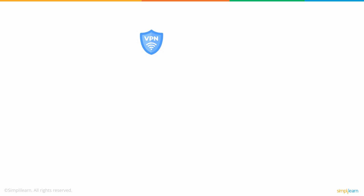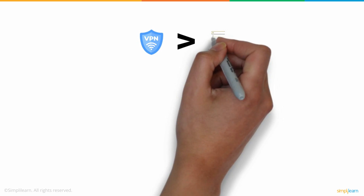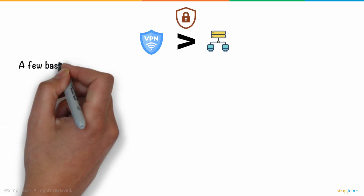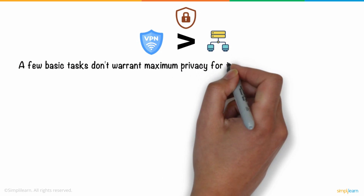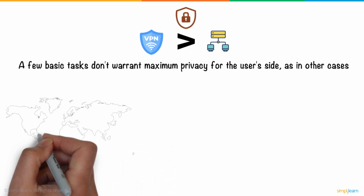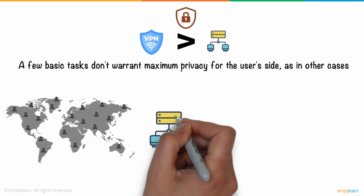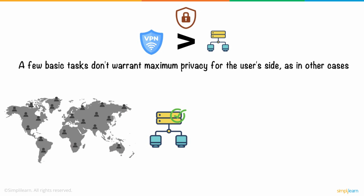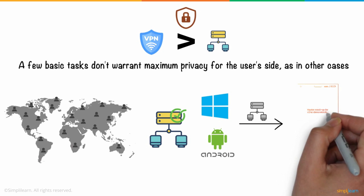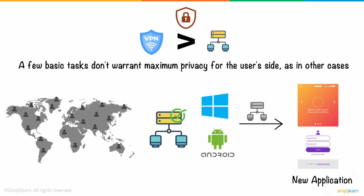One can easily argue the benefits of using VPNs over proxies for added security measures. However, a few basic tasks don't warrant maximum privacy on the user's side. For example, many consumers worldwide find proxy services more convenient, since all major operating systems — from Windows to Android — allow proxy configuration without the hassle of installing new applications, as is the case with a VPN.